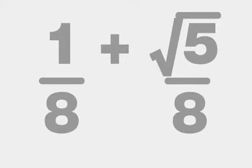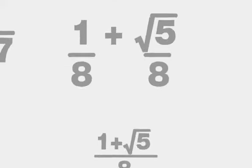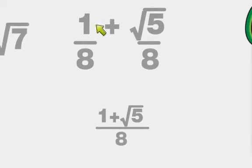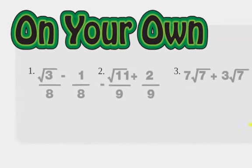All right, just like with other adding fractions, you put them over each other, and the 1 combines with the square root of 5, and you get this. Why don't you do these on your own?